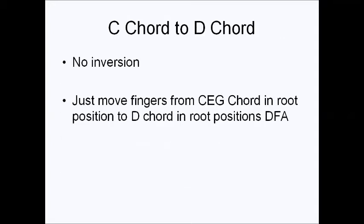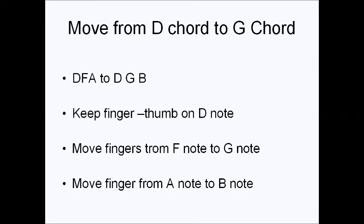Then going from C to D, you're not really using chord inversions — you just move your fingers from C, E, G root position to D, F, A root position. Then from the D chord, move to the second inversion of the G chord: D, G, B. You can keep your thumb on the D note, move the finger on F up to G, and move the finger on A up to B. That's how you go from the D chord to the G chord.